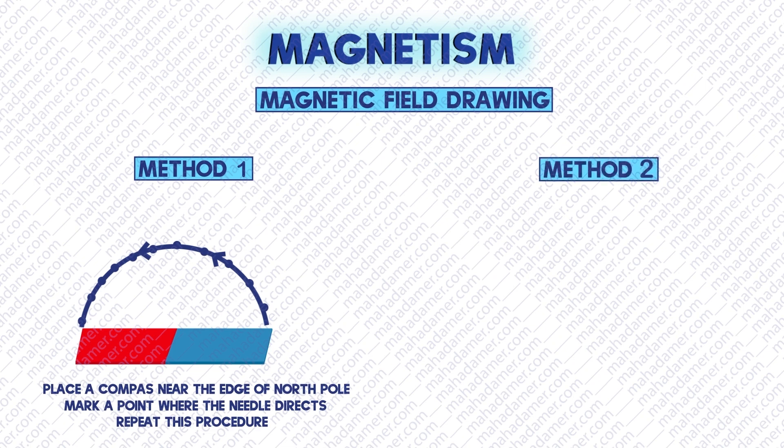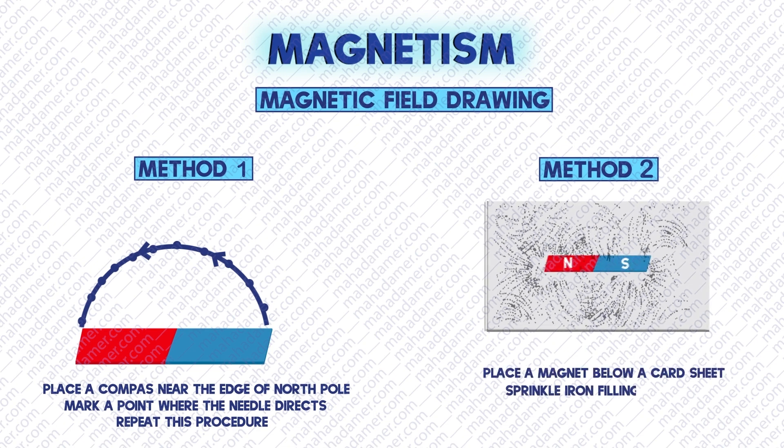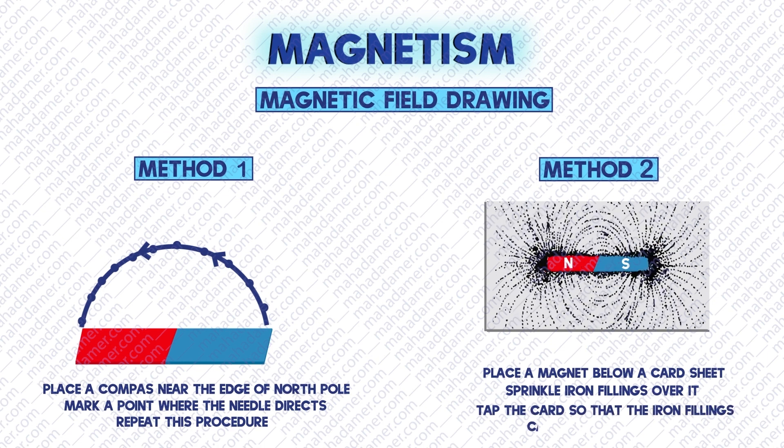The second method is the iron fillings method. We place a magnet below a card sheet and sprinkle iron fillings over it. Tap the card sheet slightly so that the iron fillings can displace and take the position of the magnetic field. This method only gives us the shape of the magnetic field.